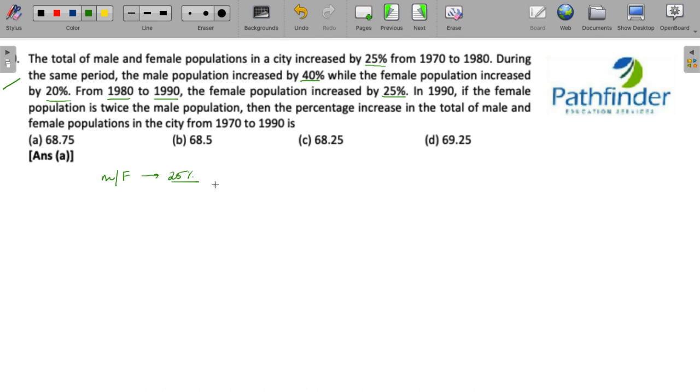Male population increased by 40%, female population increased by 20% and the total increased by 25%. Applying allegation rule, we can easily see that the ratio of male and female population must be 1 is to 3.